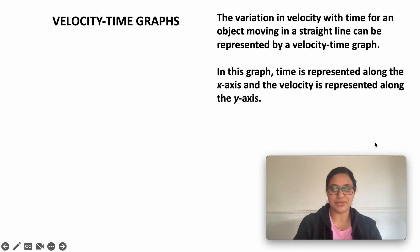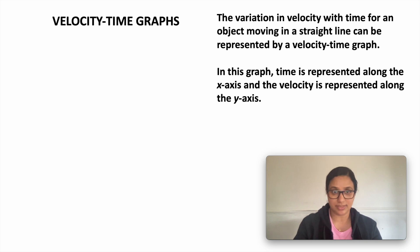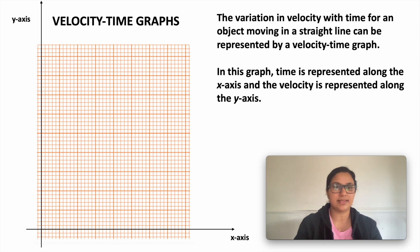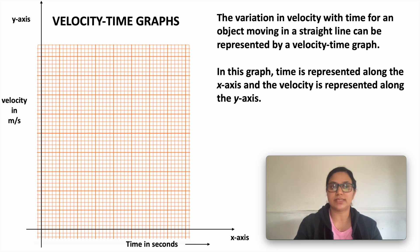As I mentioned, a velocity-time graph is a variation of velocity with time. In this graph, we have the x-axis and y-axis. Time is taken along the x-axis and velocity is taken along the y-axis.